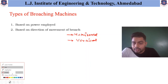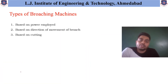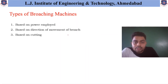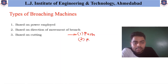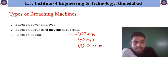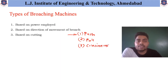The third way to divide the broaching machine is based on cutting. These broaching machines are divided as: it may be a push type broaching machine, it may be a pull type broaching machine, or it may be a continuous type broaching machine. These are the three different ways by which the cutting action takes place.